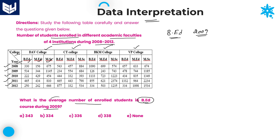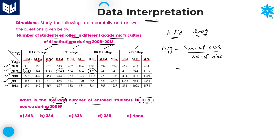For BED in 2009, you need to calculate the average number of students enrolled. Average equals sum of observations divided by number of observations. In 2009, the BED values across all four institutions are: DAV college — 534, City college — 234, BKM college — 126, and VP college — 478.